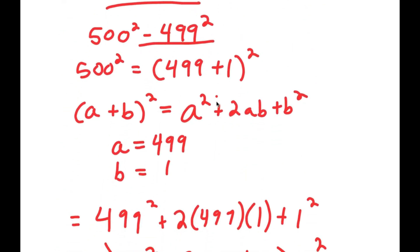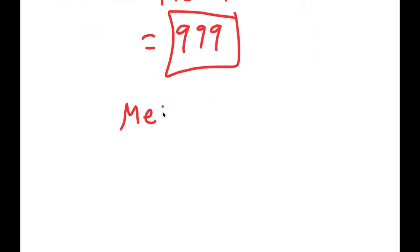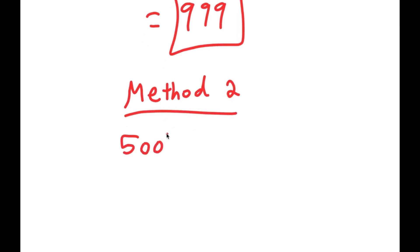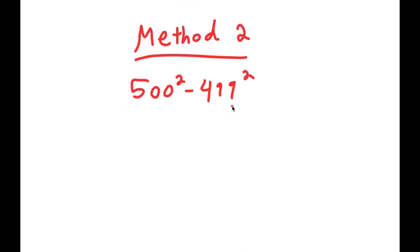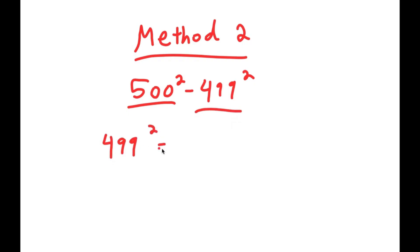For method 2, we again have 500 squared minus 499 squared. This time, instead of rewriting 500 squared, I'm going to rewrite 499 squared. 499 squared is the same thing as 500 minus 1 squared.